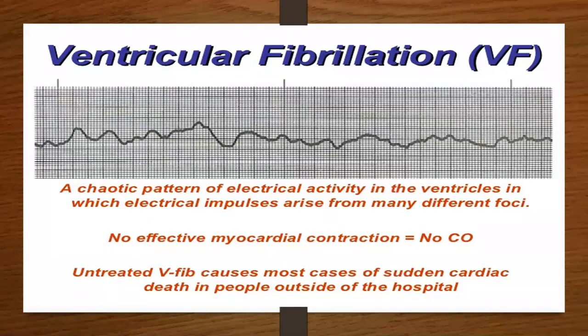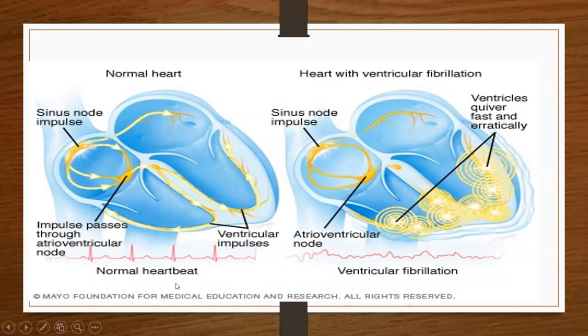Our next one is ventricular fibrillation. This is a chaotic pattern of electrical activity in the ventricles in which the electrical impulses arise from many different foci. There's no cardiac output, and untreated V-fib causes most cases of sudden cardiac death in patients outside of the hospital. Instead of your ventricles actually beating, they just quiver. This is the pattern you'll see on the EKG with V-fib.